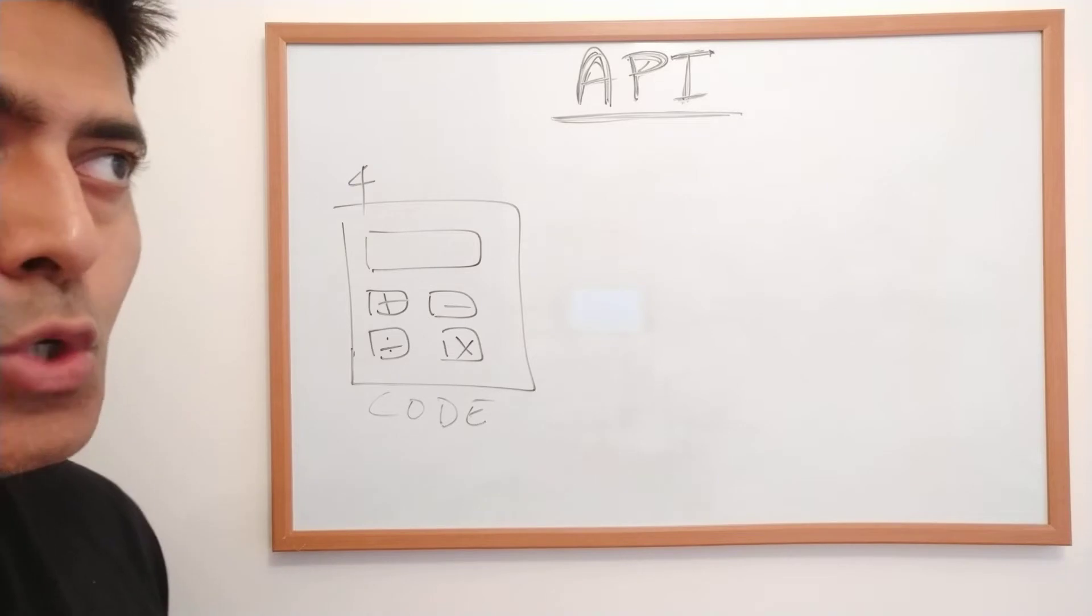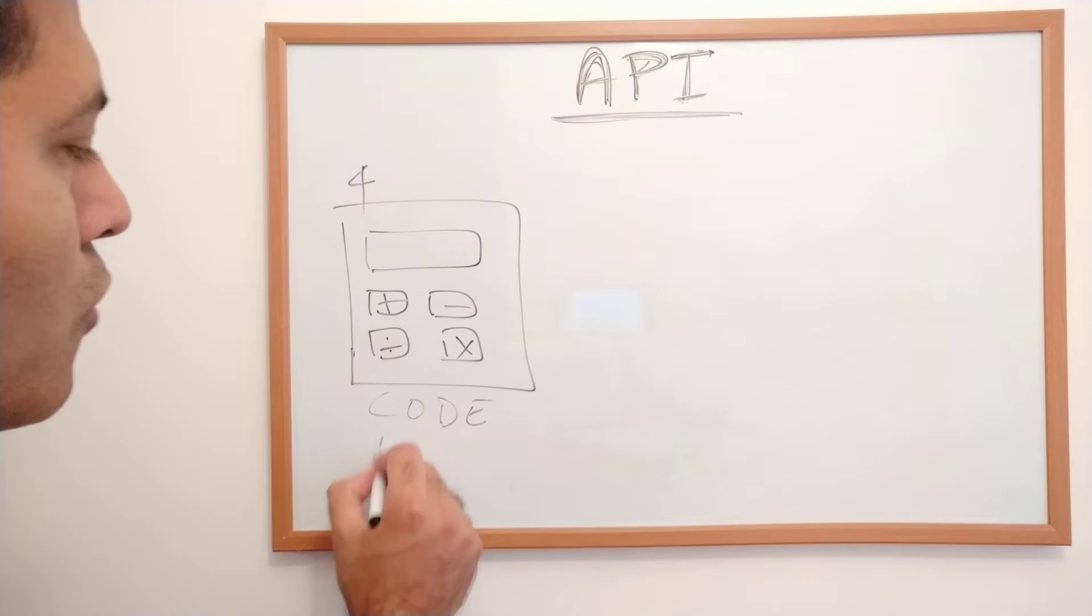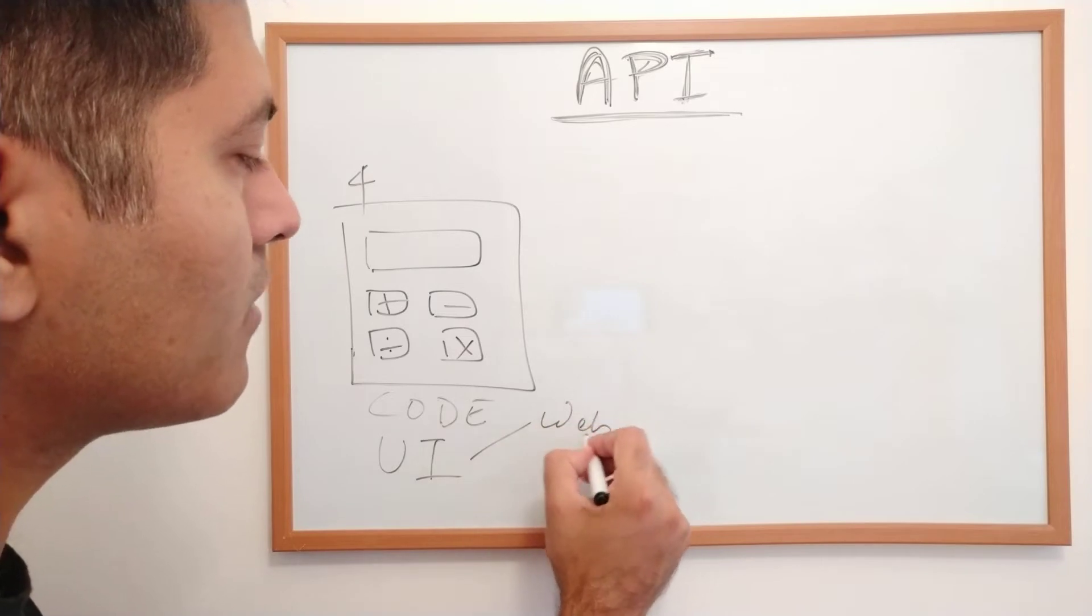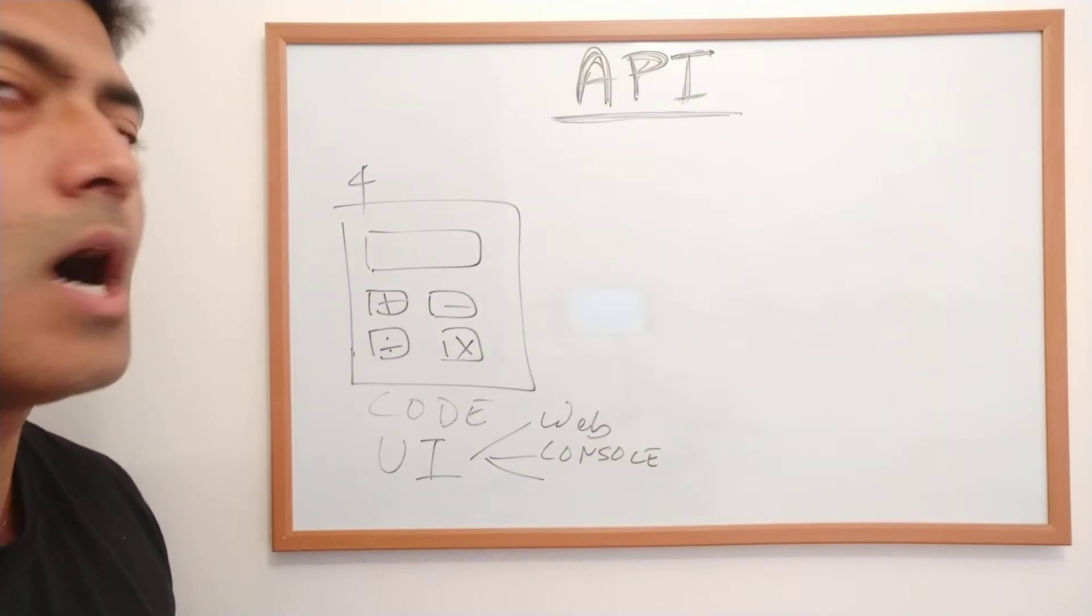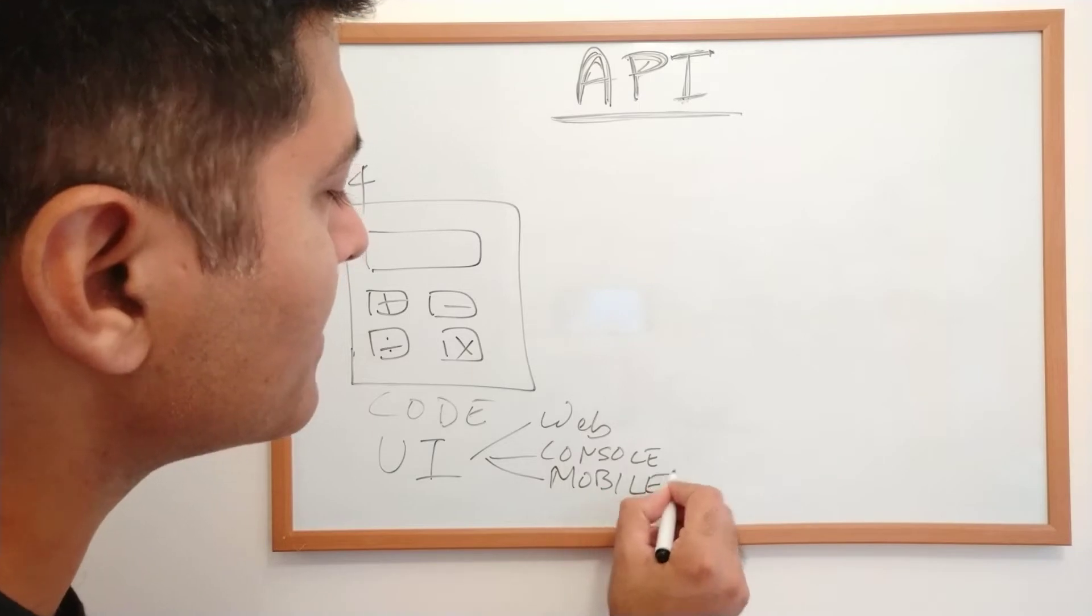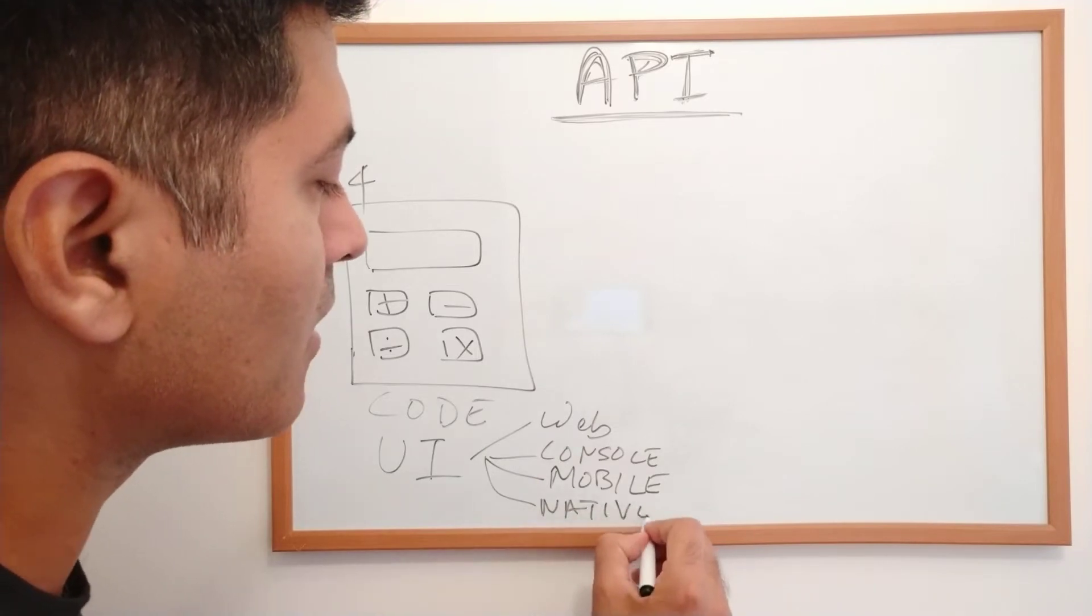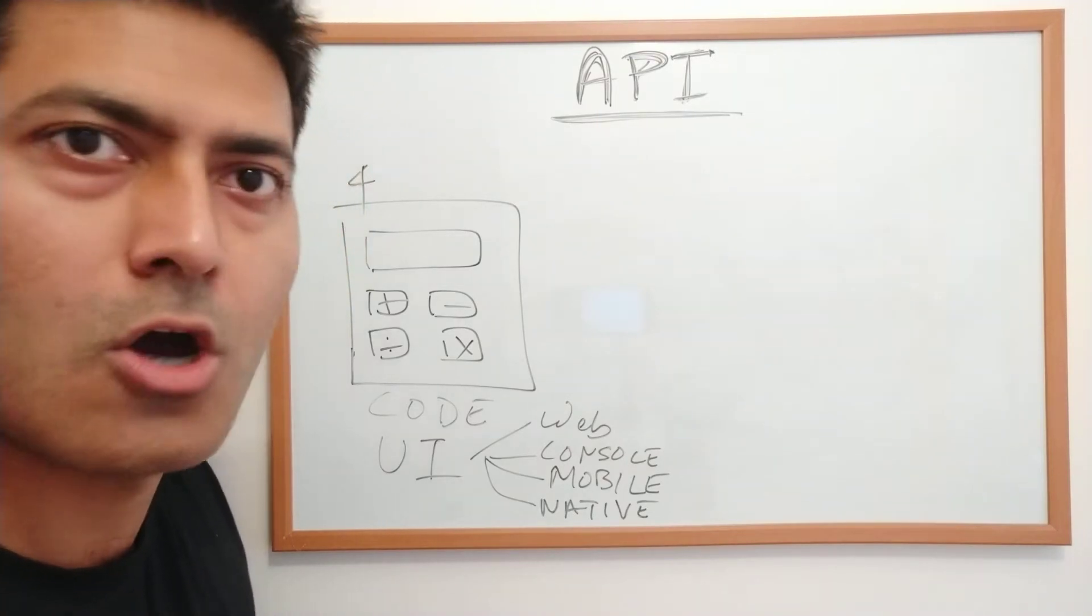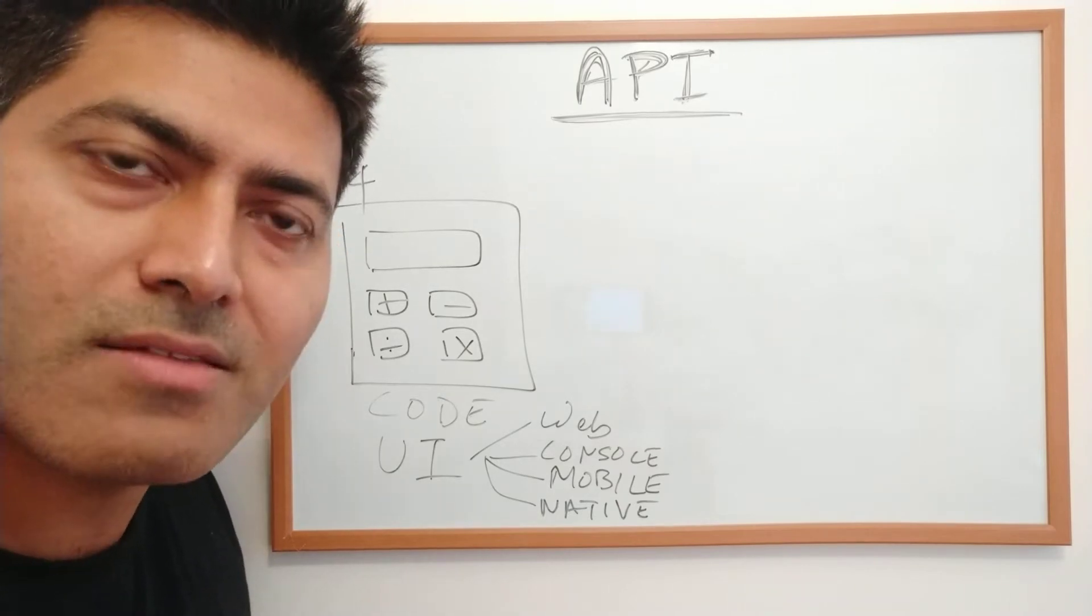To interact with your application, you also have a user interface. This UI could be a web interface, a console, or a mobile app. There are other interfaces too, like native applications for Windows or Mac. I'm sure you're familiar with the calculator app on your desktop or laptop that you need to install. There are several UIs you can build.